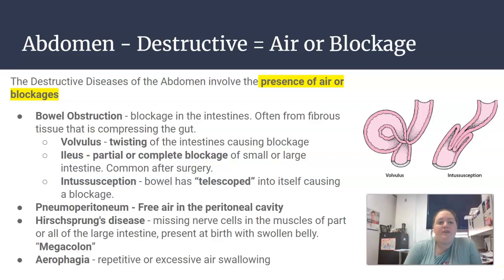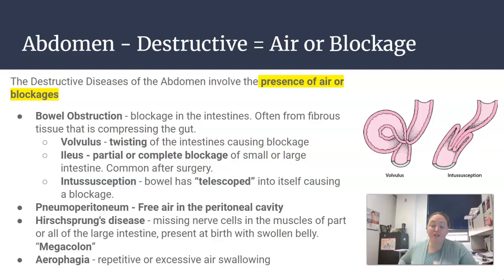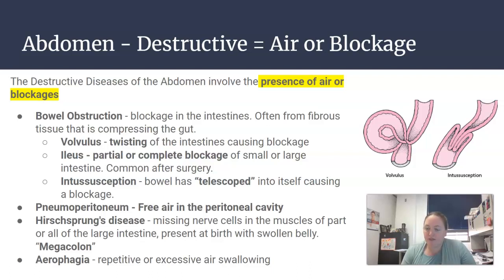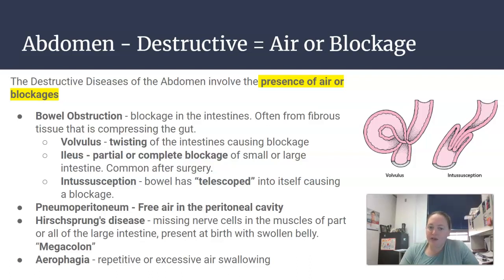We're going to continue on with destructive abdomen pathology. Destructive diseases of the abdomen usually involve a presence of air or a blockage of some sort. For bowel obstruction, some terminology we should know: volvulus involves the twisting of the intestine causing a blockage; ileus could be a partial or complete blockage, and it's common after surgery; and intussusception is the telescoping — when the intestines telescope over itself, which tends to happen in pediatrics. Pneumoperitoneum is free air in the peritoneal cavity.